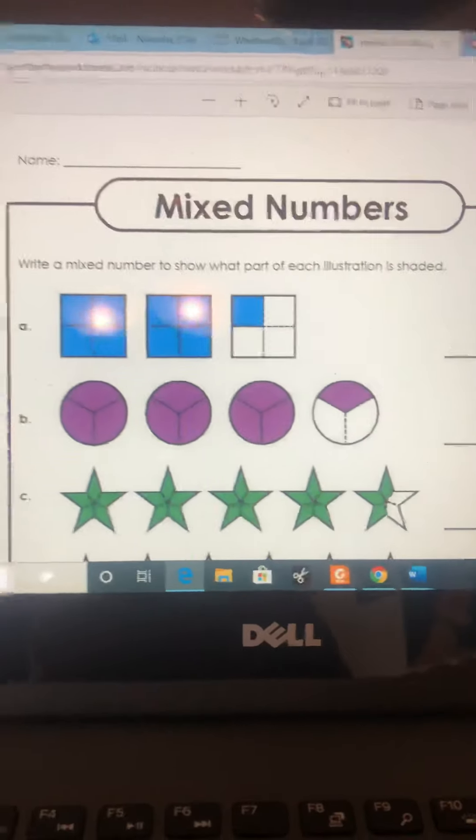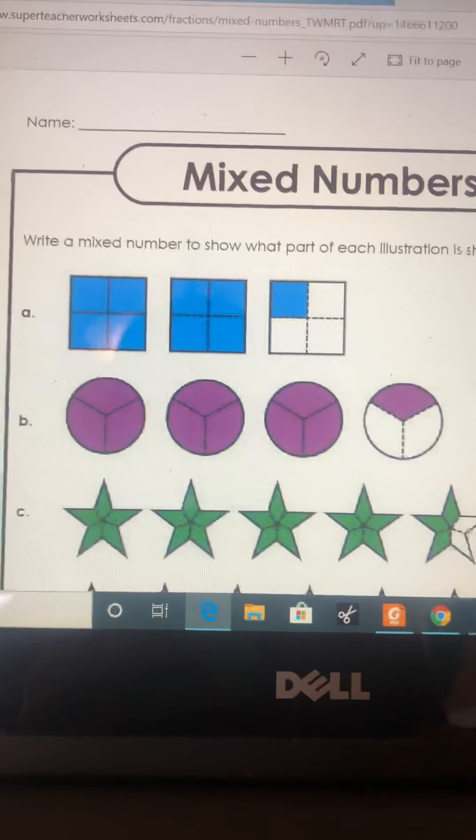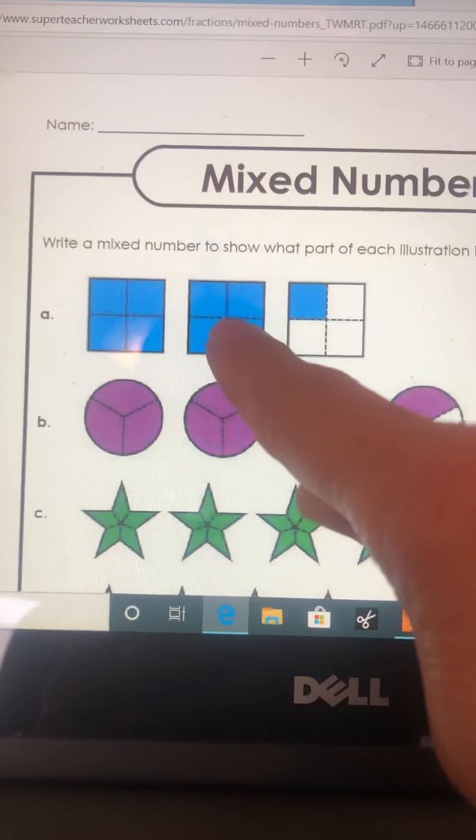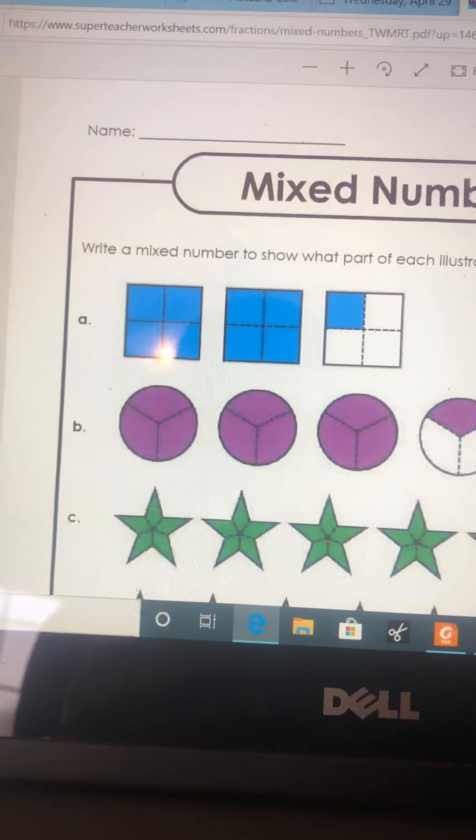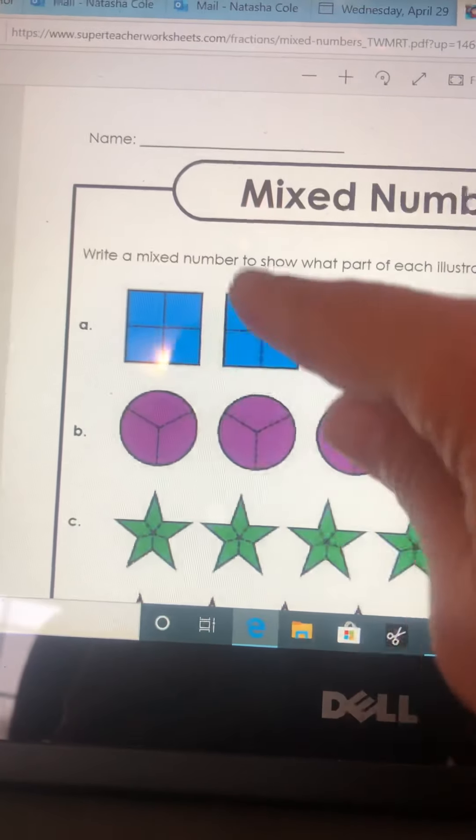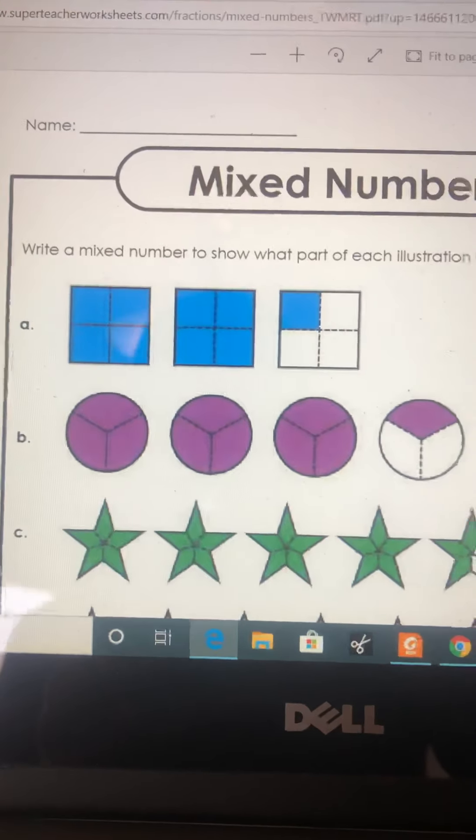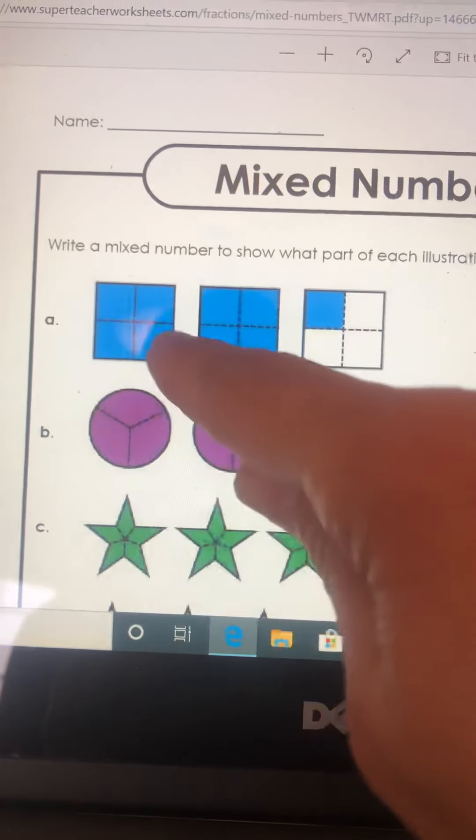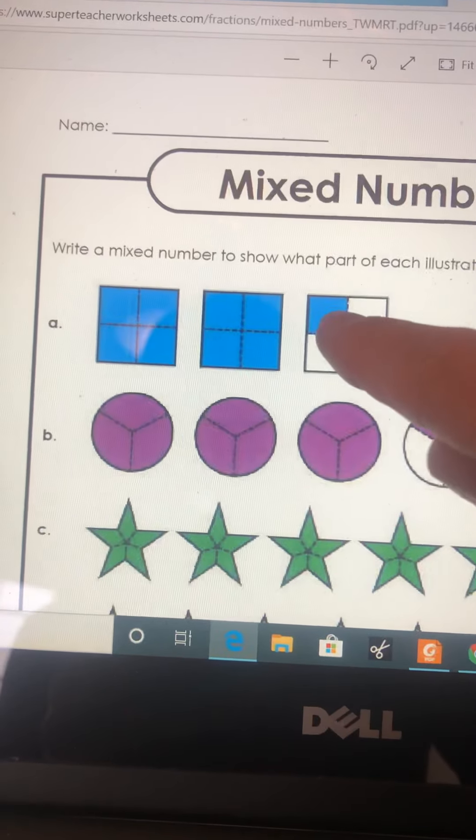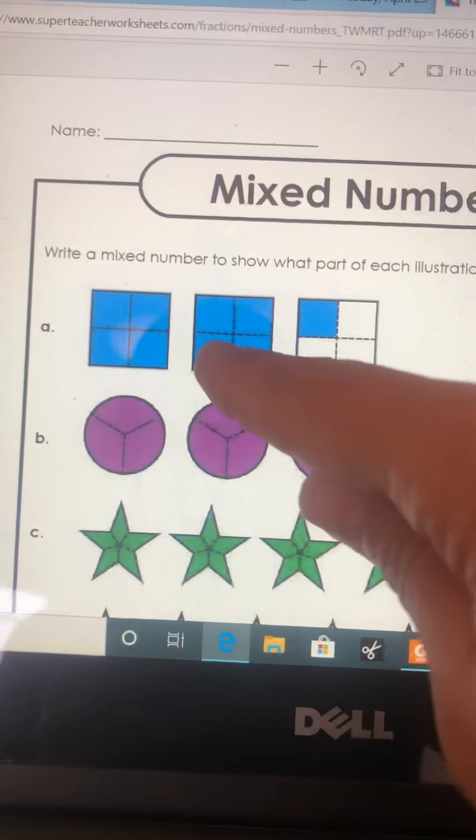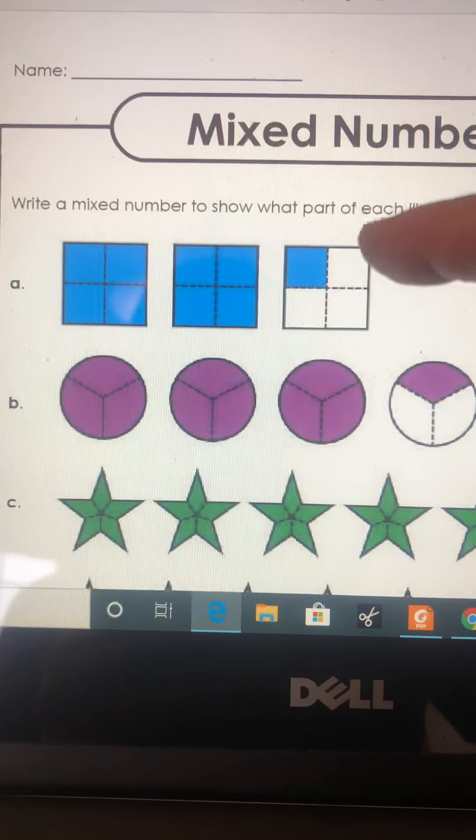So this is some mixed numbers right here. Basically what a mixed number is, we can see that we have two full squares shaded and one quarter. The denominator, remember denominator meaning down, the number on the bottom is what the shapes are divided into. So they're divided into fours. We have four shaded, eight shaded, nine shaded. We have nine small squares shaded out of the denominator four. So the mixed number for this would be nine out of four, nine quarters.